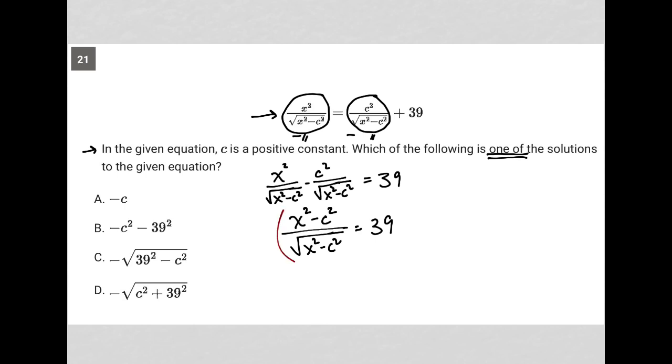I'm actually going to do something kind of weird here. I'm going to square both sides of this equation. So in doing that, my numerator is now x squared minus c squared squared. My denominator is just x squared minus c squared.